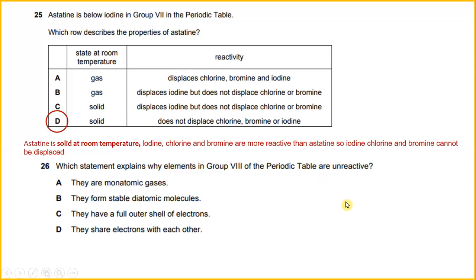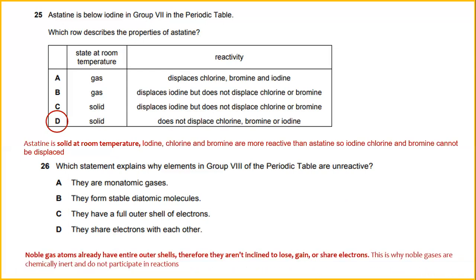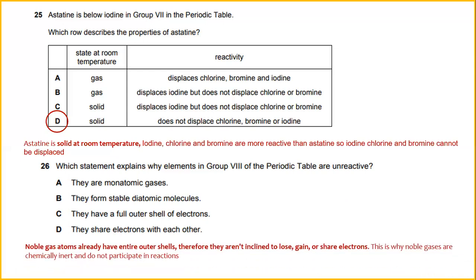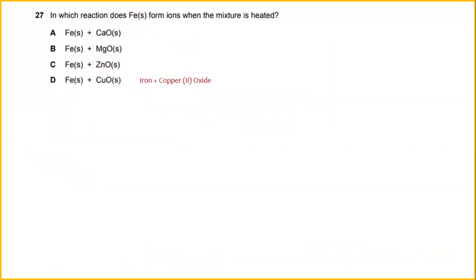Which statement explains why elements in group 8 of the periodic table are unreactive? Noble gas atoms already have a full outer shell and therefore they are not inclined to lose, gain, or share electrons. This is why noble gases are chemically inert and do not participate in reactions. The answer is C: they have a full outer shell of electrons.